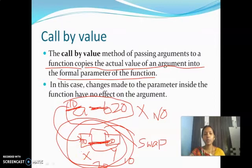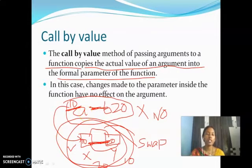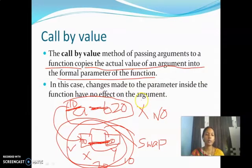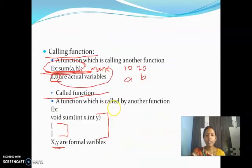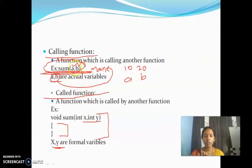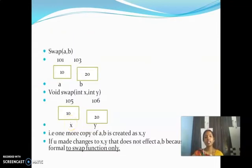That means when you pass a value, the value gets copied to another variable. If you are changing values in the copied variable, only the copied content is modified — the original content will not be changed. So in call by value, changes made to the parameter inside the function have no effect on the argument. Here parameters are x and y, and arguments are a, b. So x and y have no impact on the arguments a and b. This is call by value.